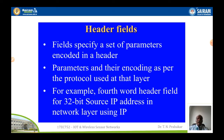Header fields specify a set of parameters encoded in a header, and parameters and their encoding are as per the protocol used at that particular layer. For example, the fourth header field gives the 32-bit source IP address — that is, from where the data originated. The next field gives the destination IP address. So these are the informations that are available in the header fields.